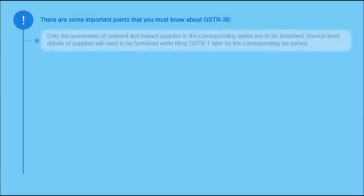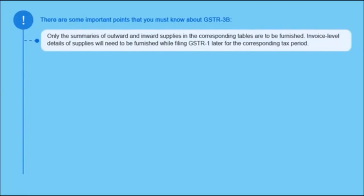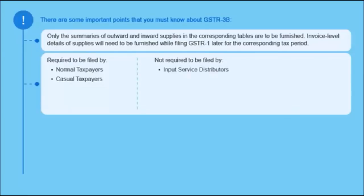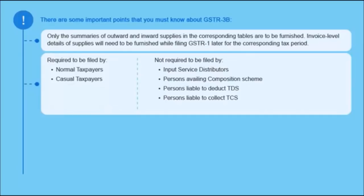There are some important points about GSTR 3B. In Form GSTR 3B, only the summaries of outward and inward supplies in the corresponding tables are to be furnished. Invoice level details of supplies will need to be furnished while filing GSTR 1 later for the corresponding tax period. GSTR 3B is filed by normal taxpayers as well as casual taxpayers. It is not required to be filed by input service distributors, persons availing composition scheme, persons liable to deduct TDS, persons liable to collect TCS, and online information and data retrieval (OIDAR) service providers.